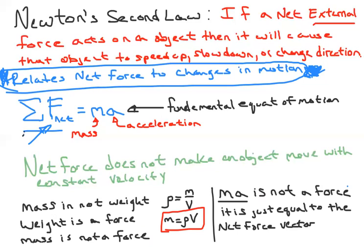F-net is where we take all the forces and combine them into one — we take all the force vectors and combine them into one single net force vector.